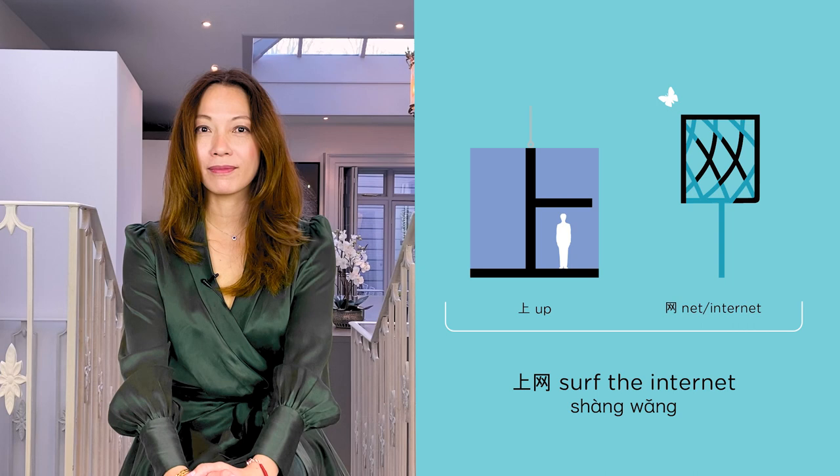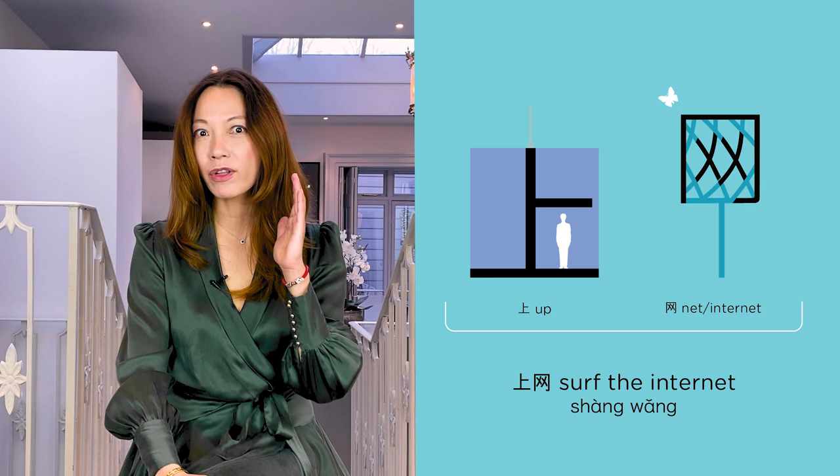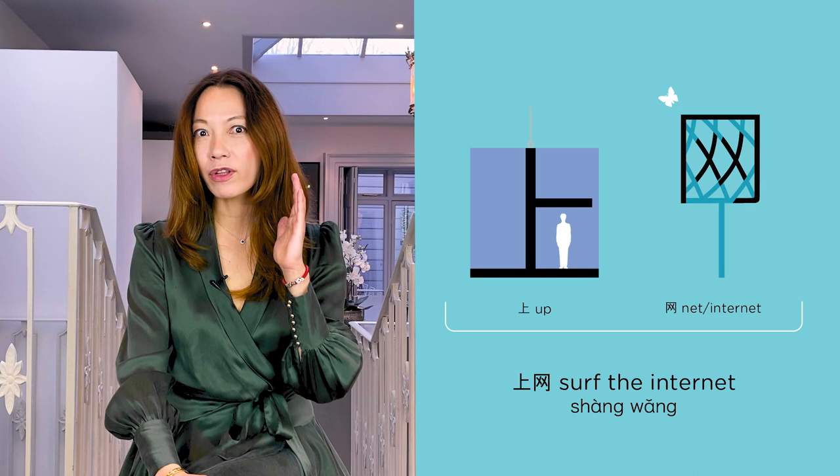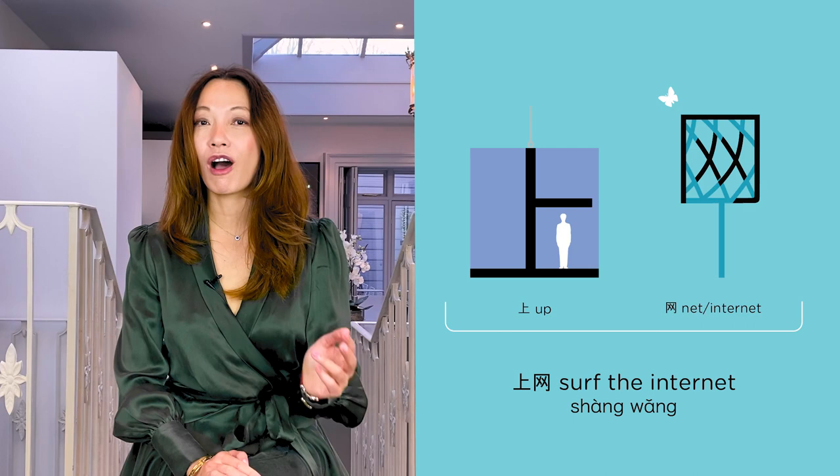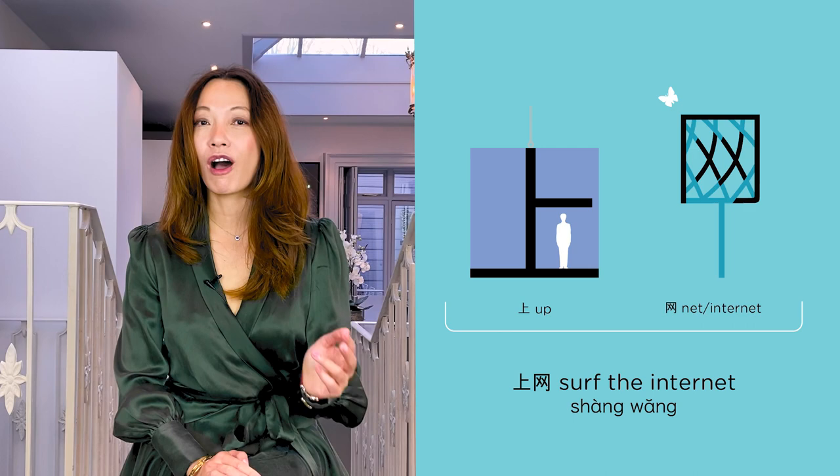To get online, you say 上网. 上 means up. 上 is the fourth tone — to go up, you have to go down the fourth tone. 上, 网, 上网 — to get on the internet.